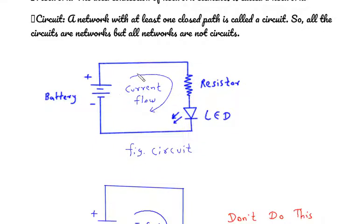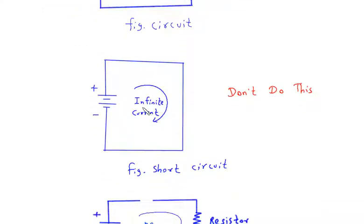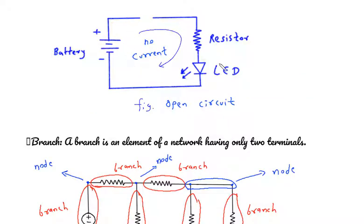This is a circuit because it has at least one closed path. This is a short circuit, so infinite amount of current will flow. This is an open circuit, so no current will flow through this circuit. Resistor, LED, battery, these are the network elements.